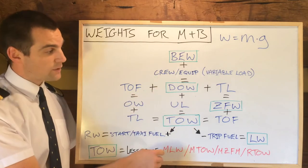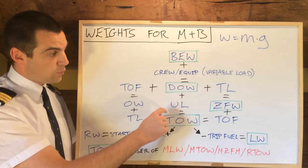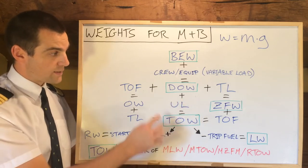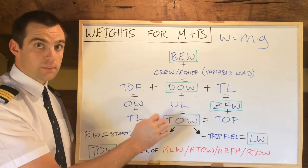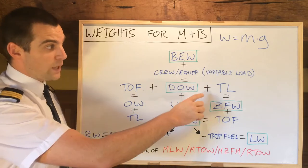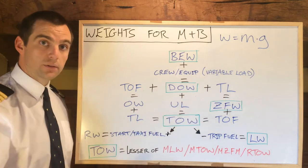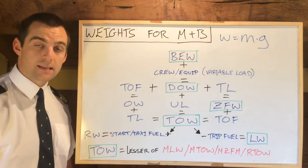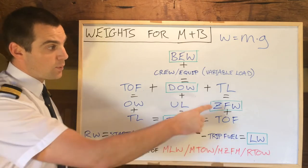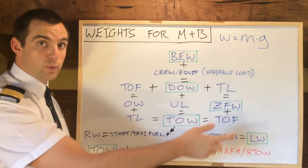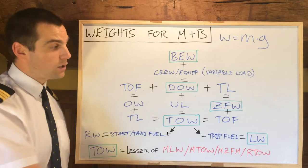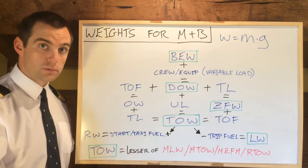Continuing down, if we add the useful load we will get to the takeoff weight. The useful load can be broken down into two sections — we can go either left or right. If we add the traffic load — i.e. passengers, cargo, mail, anything like that — we will get the zero fuel weight. We have no fuel on board yet, so we are ready to go but we have no fuel.